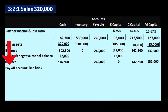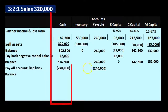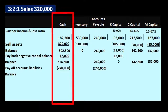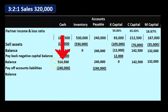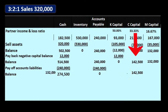Next step: pay off the liability. We pay the $240,000 accounts payable with cash. So $514,500 minus $240,000 leaves us with a cash balance of $274,500. Accounts payable goes from $240,000 down to zero. The capital accounts for C and M come down at $142,500 and $132,000 respectively.